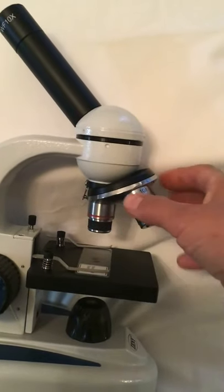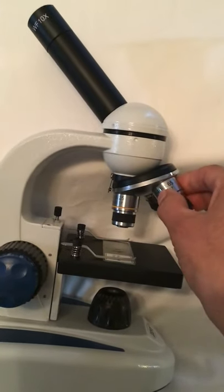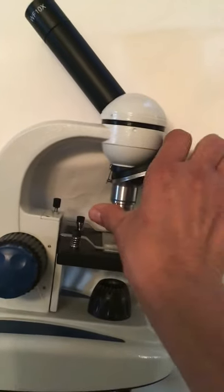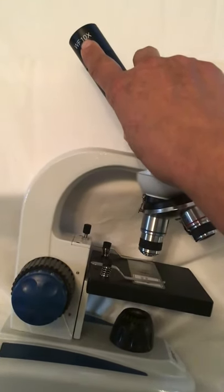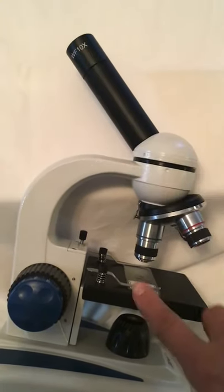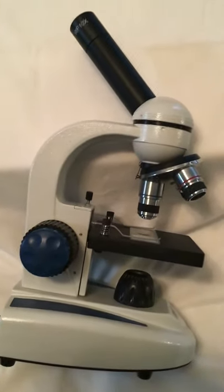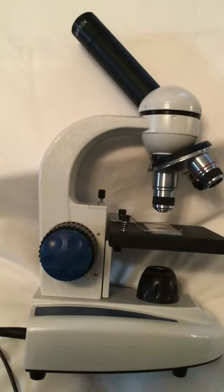Now if you set it at 40x, then it would increase the magnification of that particular specimen by 400 times, because 10 times 40 equals 400 times. And that's probably the setting you will use to get better detail for the cell.